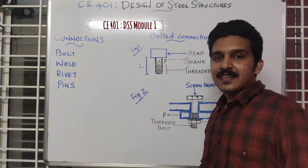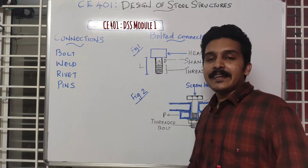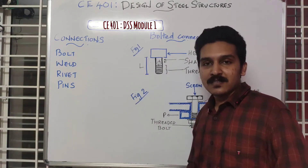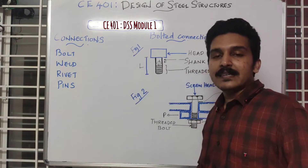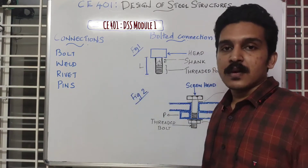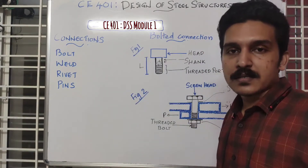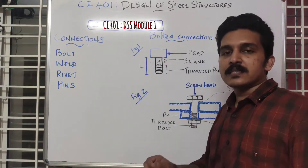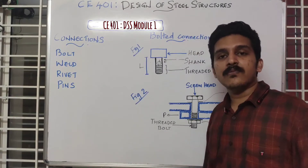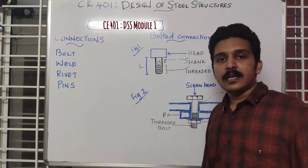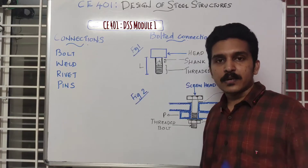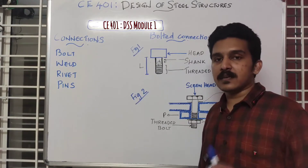Hi, this is the second lecture on design of steel structures. In this video, I will be discussing about connections. Connections are defined as structural fasteners. They connect different members together, particularly in steel structures.